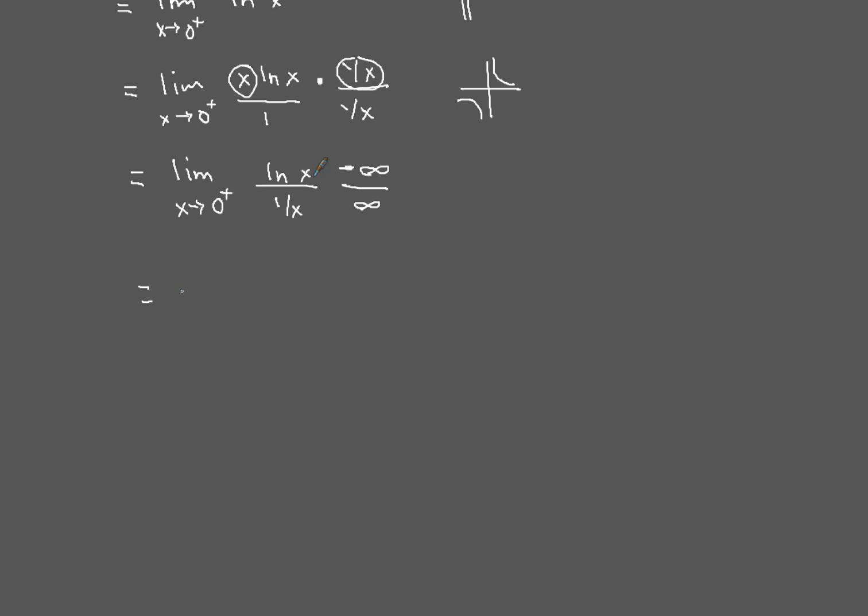Now, when we do that, the limit as x goes to 0 from the right, derivative of natural log is just 1 over x. And then the derivative of 1 over x is going to give us negative 1 over x squared. Cleaning that up, using our algebraic skills, when we do that, you're going to be left with the limit as x goes to 0 from the right. All of that other piece just cleans up to negative x.